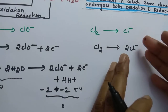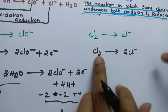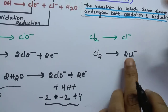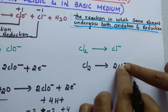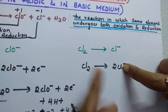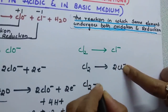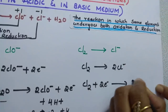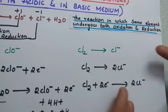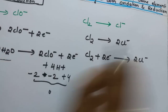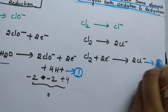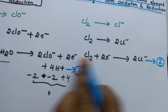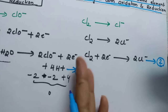Now for the reduction reaction: Cl₂ gains electrons, changing from 0 to minus 1 — a difference of 1 per chlorine. For 2 chlorine atoms, 2 electrons are gained. So: Cl₂ plus 2 electrons gives 2Cl⁻. There is no oxygen or hydrogen to balance, so it is already balanced. Label this equation 2. If the number of electrons are not the same in both equations, multiply by a suitable number — but here both already have 2 electrons, so they are the same.